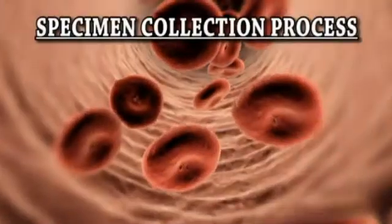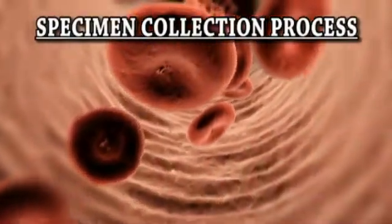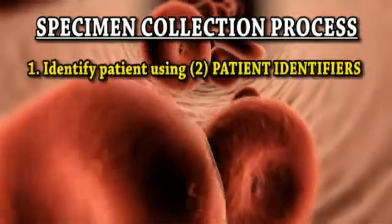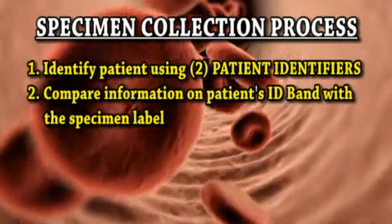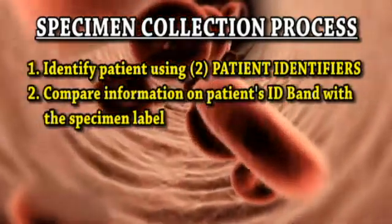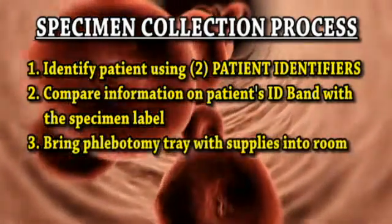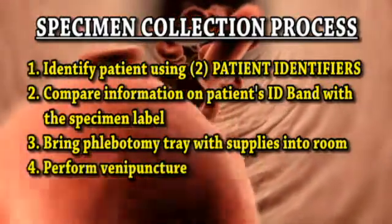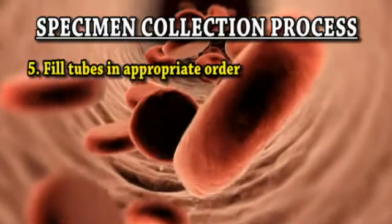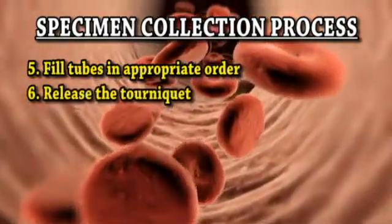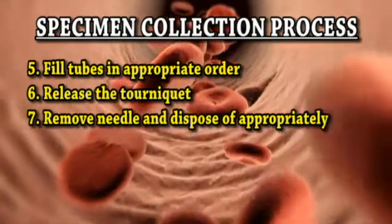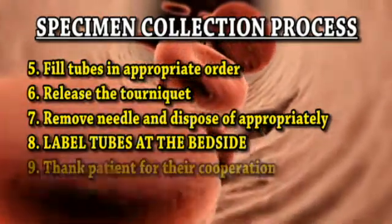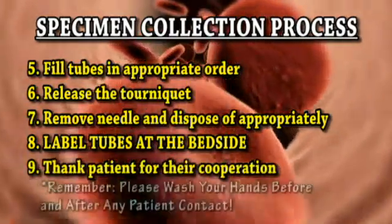Now that you have viewed the proper flow of the phlebotomy process, let's take a look at the important steps involved. Identify the patient using two patient identifiers. Compare the information on the patient's ID band with the specimen label. Bring the phlebotomy tray with the supplies into the room. Perform the venipuncture. Fill the tubes in the appropriate order. Release the tourniquet. Remove the needle and dispose of appropriately. Label tubes at the bedside. Thank the patient for their cooperation.